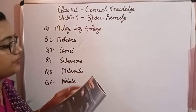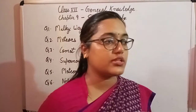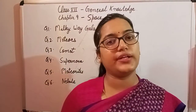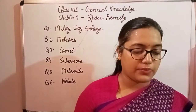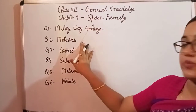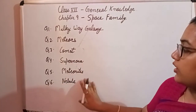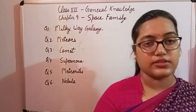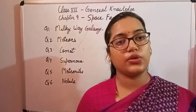So these are six heavenly bodies whose images are given to you, and you have to identify them based on the description, image, and help box. To recap: first is Milky Way Galaxy, second is meteors, third is comet, fourth is supernova, fifth is meteorites, and sixth is nebula. You just need to remember these six heavenly body names. Thank you.